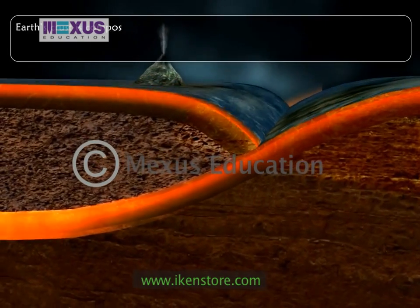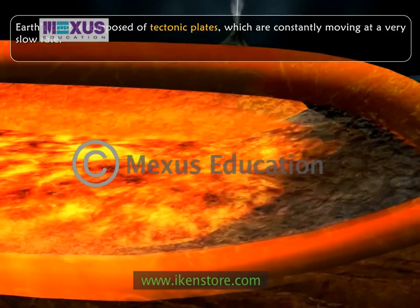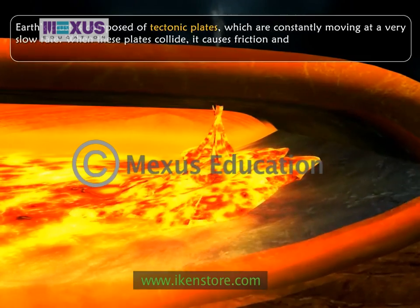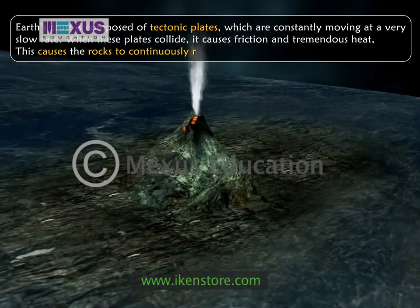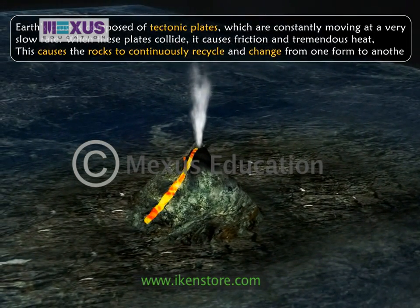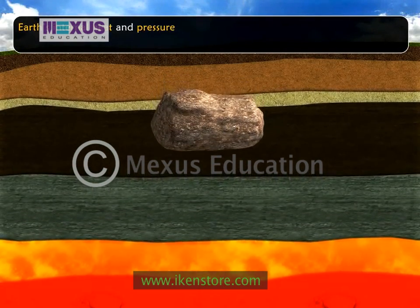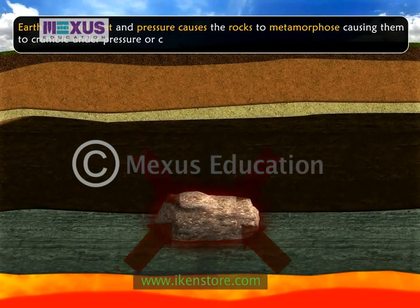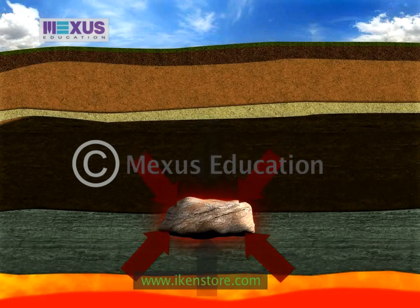Earth's crust is composed of tectonic plates which are constantly moving at a very slow rate. However, when these plates collide, it causes friction and this generates tremendous heat. This causes the rocks to continuously recycle and change from one form to another. Also, the Earth's internal heat and pressure causes the rocks to metamorphose, causing them to crumble under pressure or crystallize. Metamorphosis can occur in rock when they are heated to 300 to 700 degrees Celsius.